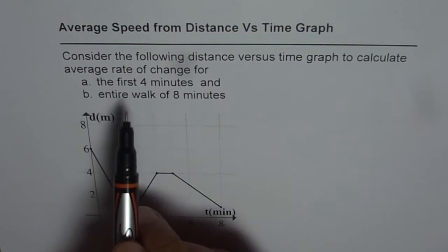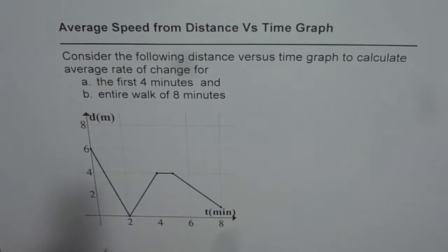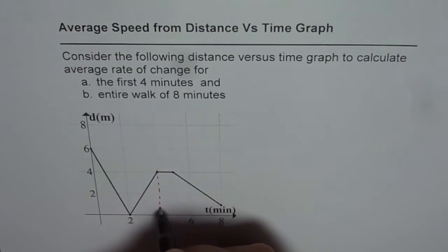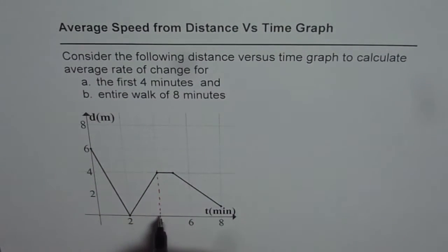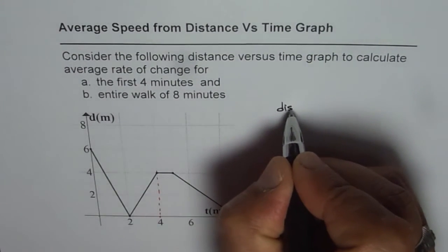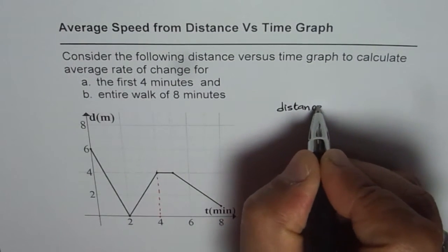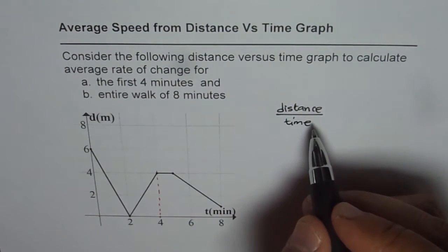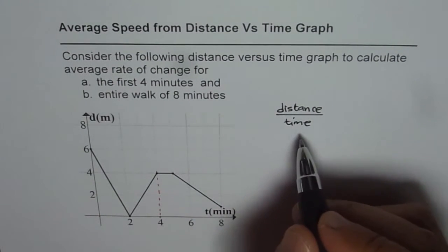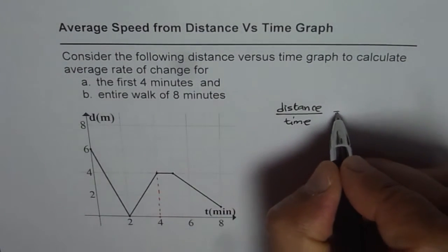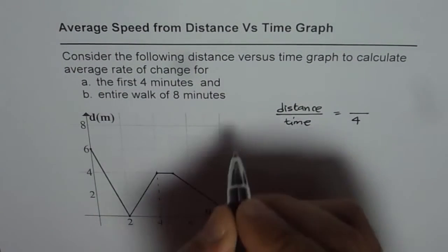Now we are given a time duration of 4 minutes. In 4 minutes, what is the distance covered? What we need to find is distance over time. That is the average rate of change for this duration. Time is from 0 to 4 minutes, so time is 4 for part A.